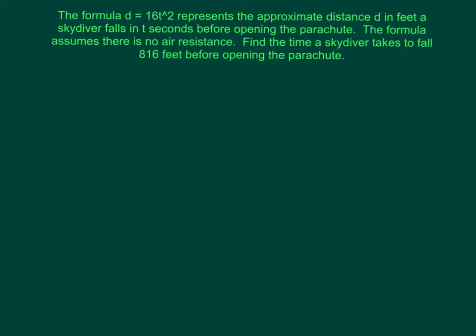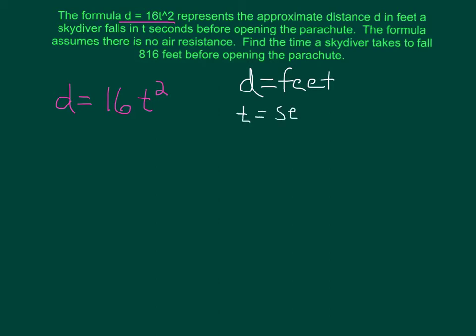The formula d equals 16t squared represents the approximate distance d in feet a skydiver falls in t seconds. The variable d represents feet and the variable t represents seconds. Imagine jumping out of an airplane — this formula will tell you how many feet you fall after how many seconds. The formula assumes there's no air resistance.